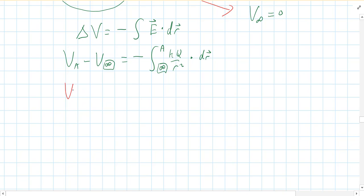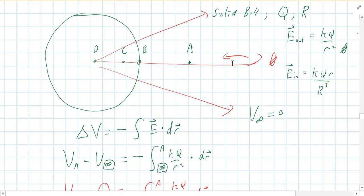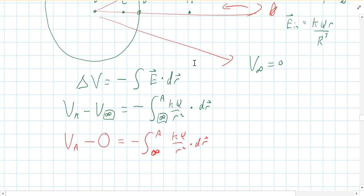The voltage at A minus the voltage at infinity — which we know to be zero — is negative the integral from infinity to A of kq over r squared dot dr. The electric field is outward and we're moving inward, so dr is actually a negative dr. Dotting that negative dr with the field gives a second negative. Those two negatives cancel, so we can leave it as is, but we still have one negative out front.